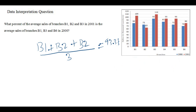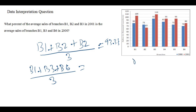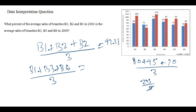Now for the second part, the sale of branches 1, 3, and 6 in 2000. Branch 1 was 80, branch 3 was 95, and branch 6 was 70. So 80 plus 95 plus 70 equals 245. Then 245 divided by 3 equals approximately 81.66.